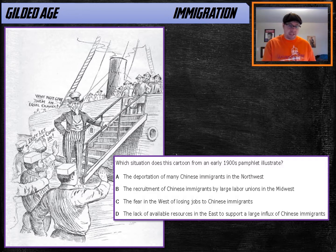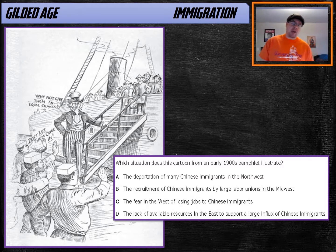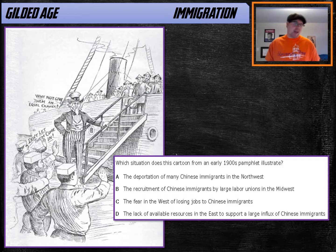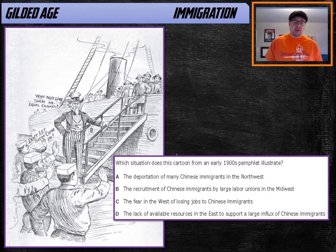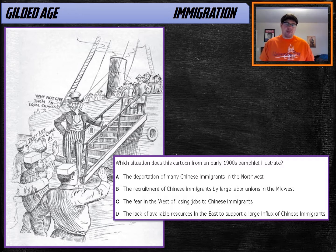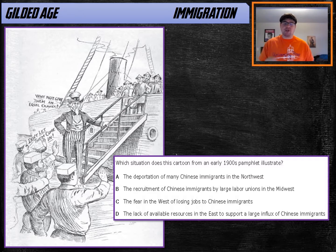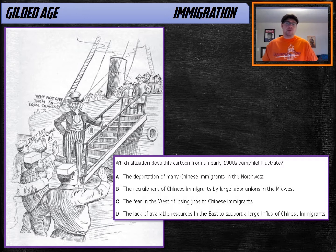In this political cartoon, you see Uncle Sam standing at the gangway of a boat with stereotypical drawings of Asian immigrants, and you see Americans on the dock saying 'don't let them come in.' The question asks what this is illustrating. This is illustrating the negative attitude Americans had towards immigration. The answer that fits is C. Why was there such a negative attitude? Almost always it's because there was a fear that immigrants would take jobs that would otherwise go to native-born Americans.